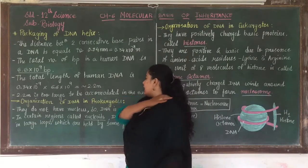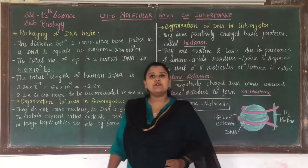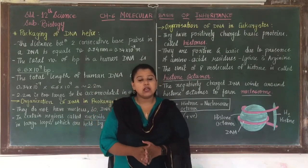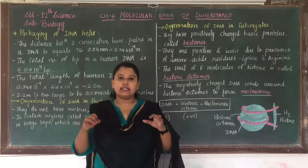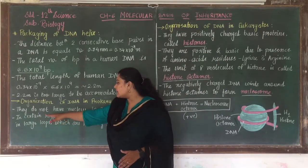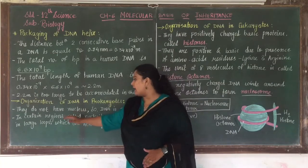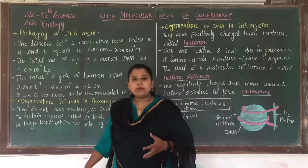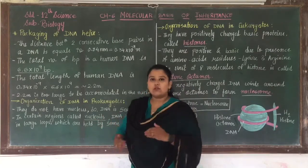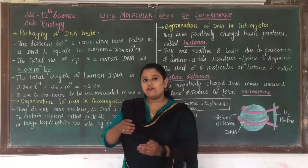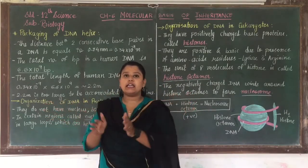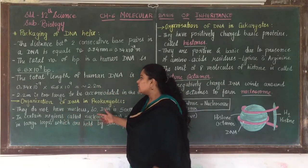First is the organization of DNA in prokaryotes. They do not have a well-defined nucleus, so there is no nuclear membrane. The whole DNA is scattered inside the cell. In certain regions called nucleoids, DNA is organized in large loops which are held together by some proteins. So in prokaryotes, DNA is present in nucleoid regions associated with proteins forming large loops.